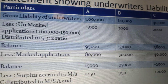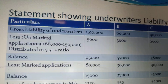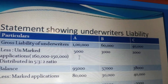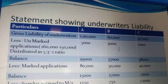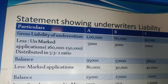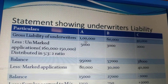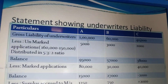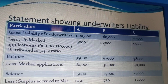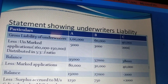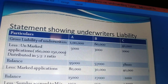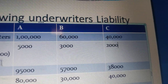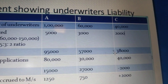We deduct the unmarked applications from the gross liability. These 10,000 unmarked applications are divided among A, B, and C in the ratio of their underwriting commitments — that is, 5:3:2 — giving 5,000 to A, 3,000 to B, and 2,000 to C. After deducting unmarked applications, the balances are: A — 95,000, B — 57,000, and C — 38,000.